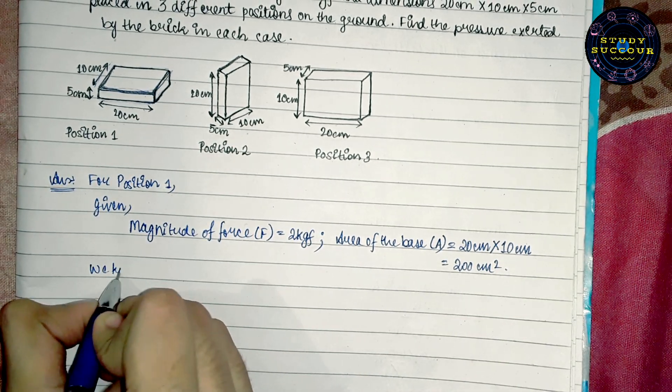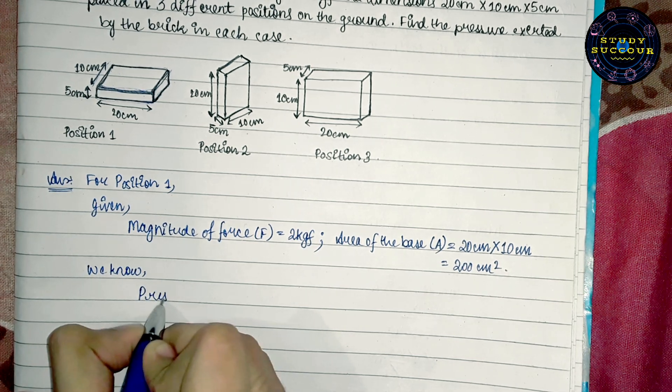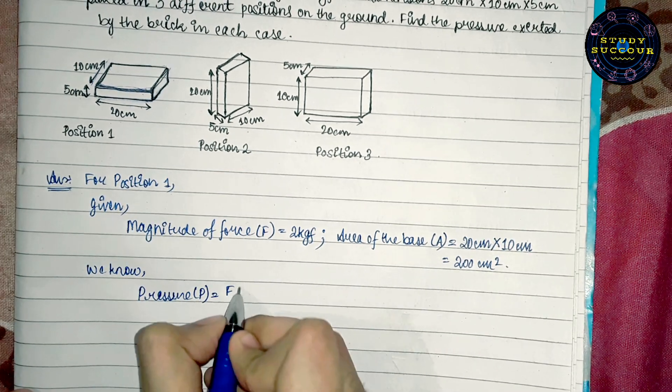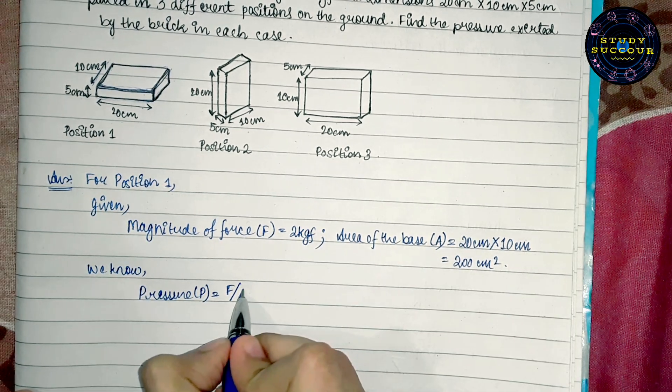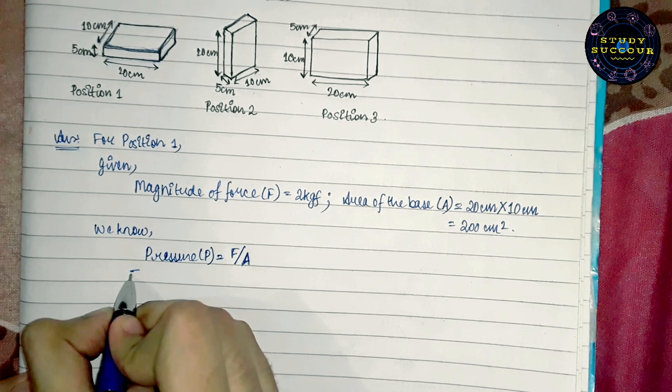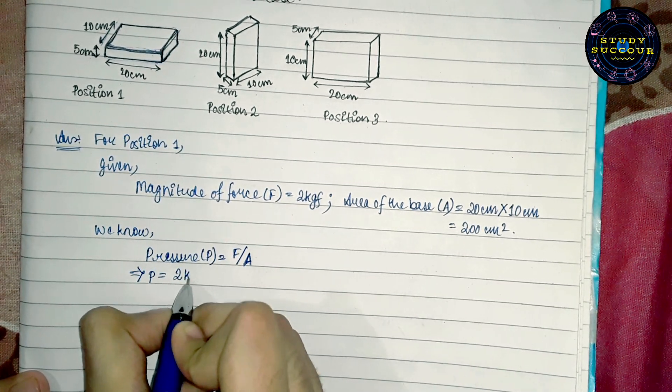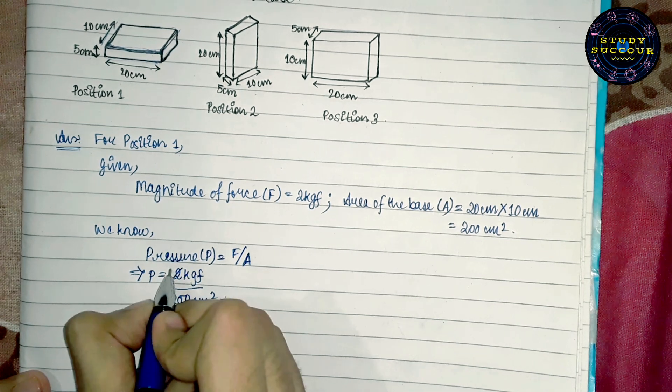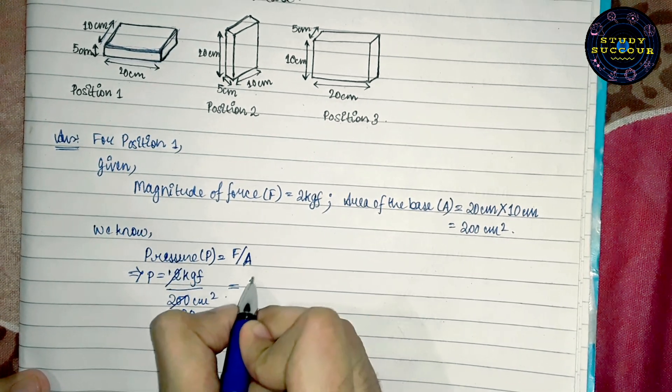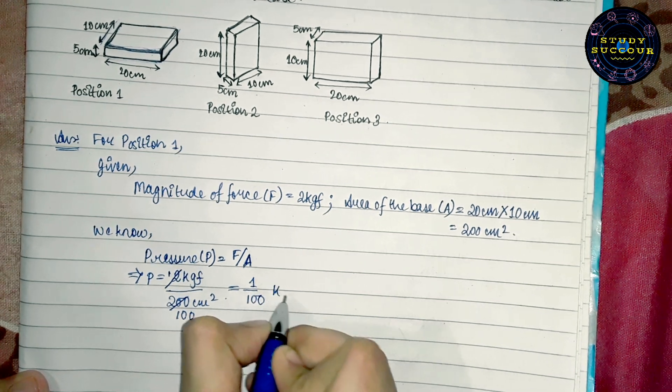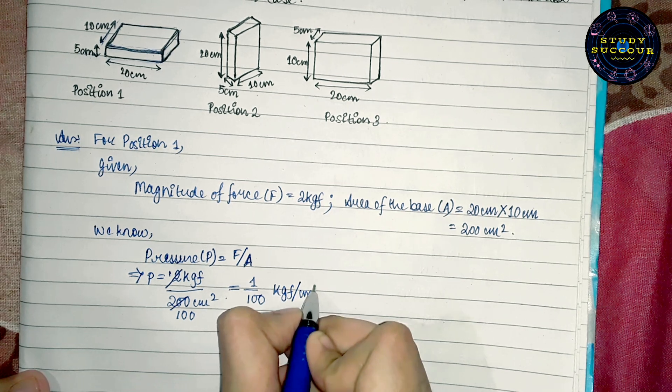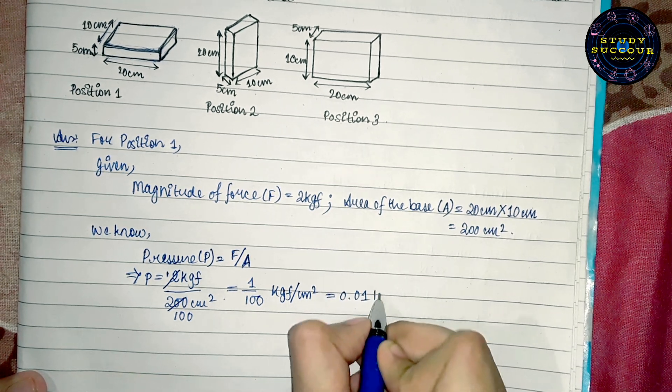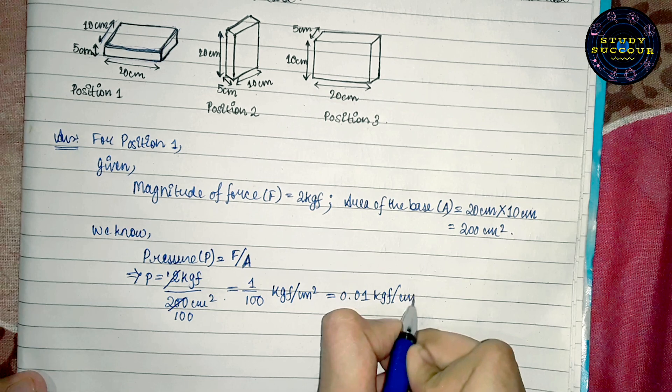Now, we know pressure P equals magnitude of force F divided by area of the base A. We have pressure P equals 2 kgf divided by 200 cm². This is 1 by 100 kgf per cm² or which can also be written as 0.01 kgf per cm².